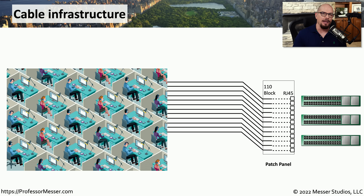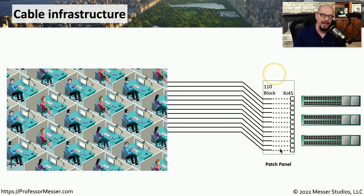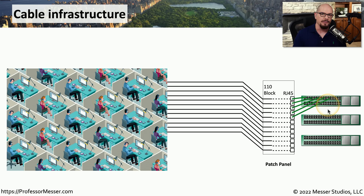One of the challenges with connecting many people in a work environment to the network is that there are a lot of cables to be managed. In a typical setup, there are cables from every desk going back to a central wiring closet on that floor. In that wiring closet is a patch panel. We first connect all of those devices to this patch panel as a permanent run — once connected from a desk to the patch panel, we don't tend to move that cable. On the other side of the patch panel are RJ45 connectors, which extend to switch interfaces in the wiring closet, connecting everyone at their desks back to the main network infrastructure.